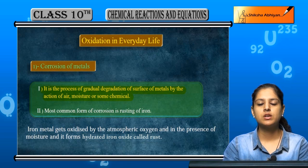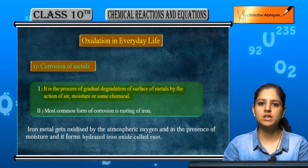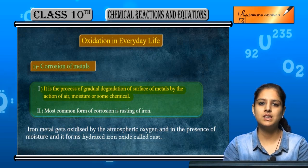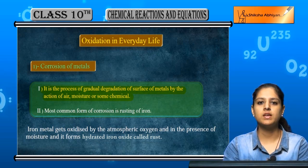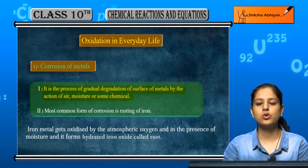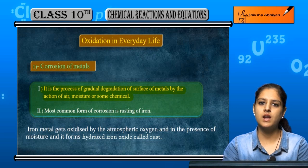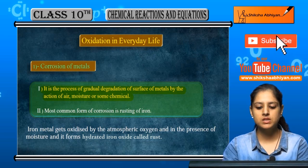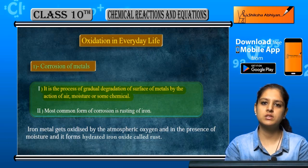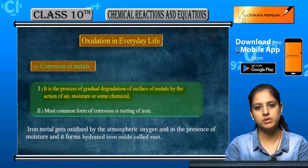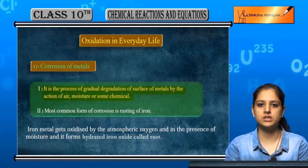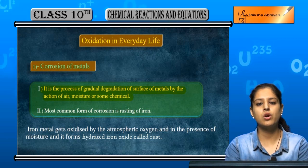Gradual degradation matlab dheere dheere jab kisi bhi metal ka jo surface hai wo kharaab ho jaata hai, degrade ho jaata hai. So we say it is the process called corrosion. Jo bhi metal hai jiska surface kharaab ho gaya hai, it has been corroded. Corrosion air ki wajay se, moisture ki wajay se, ya chemical ki wajay se ho sakta hai. For example, iron nail jo hai wo brown ho jaati hai — so that is corrosion of iron nail.